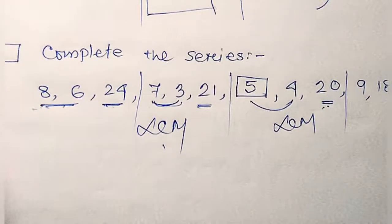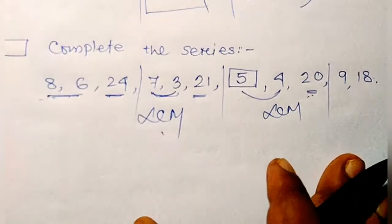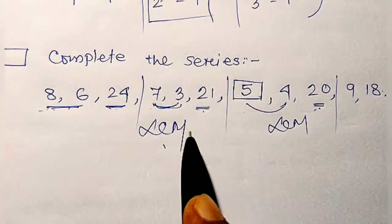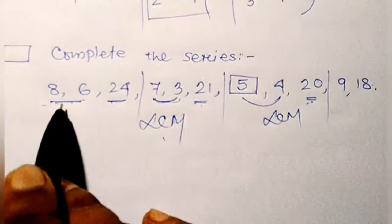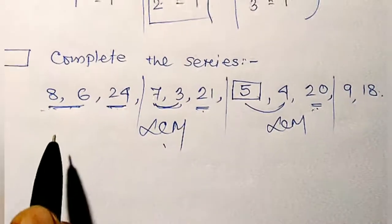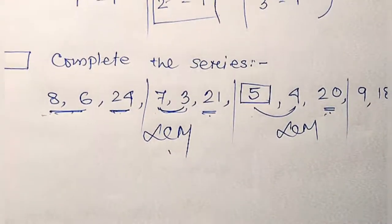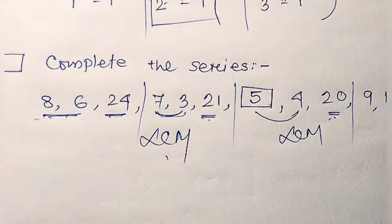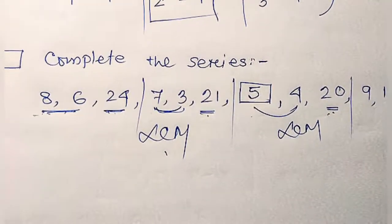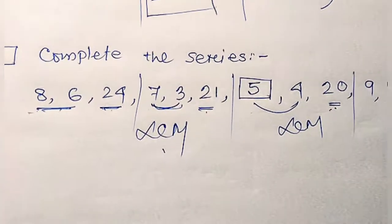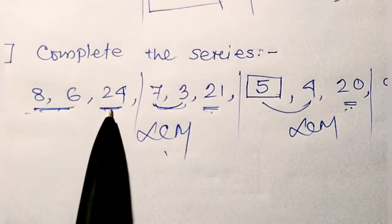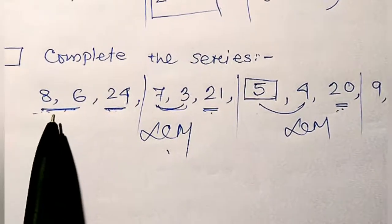This type of series is not so easy because the third term is followed by the LCM of the first two terms. Hope you have understood this one. There is no addition, no subtraction, no multiplication, nothing. In this type of problem, the third term is only the LCM of the previous two terms.